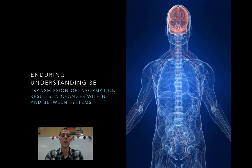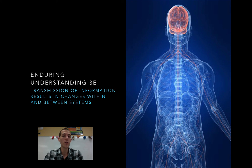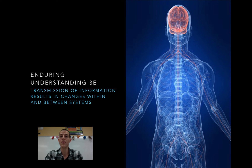Wrapping it all up is Enduring Understanding 3e, which is that transmission of information results in changes within and between systems. We'll look at two major types of systems: the nervous system, because it's all about communication, and the endocrine system, which is another communication system. We're also going to look at animal behavior, because a group of living organisms can be thought of as a living system, and communication between those organisms and how they respond to signals is important to understanding information transfer.